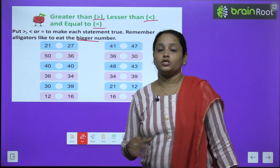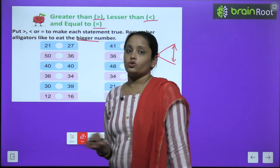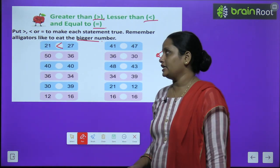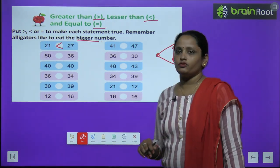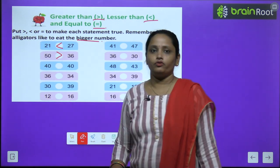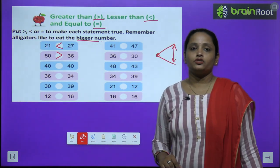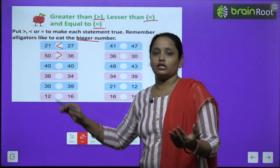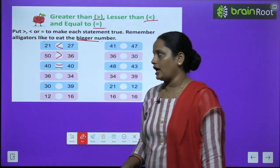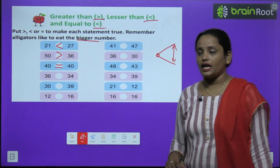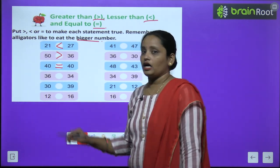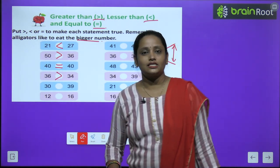So yahan pe dekhte hain, two numbers hain: 21 aur 27. So which one is bigger? 27 bigger hai, toh chalie alligator ko 27 khila dete hain. Next hai 50 and 36, which one is big? 50, toh 50 ki taraf humne mouth open kar diya. Next hai 40, idhar bhi 40 aur udhar bhi 40, means alligator kuch nahi kha paega, toh hum equal to sign laga denge. Next is 36 and 34, toh dono mein 3 hai, baad ke number ko dekha toh 6 bigger hai, toh humne alligator ko 36 khila diya.